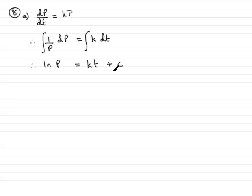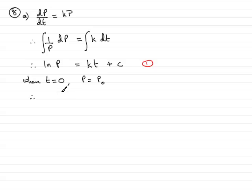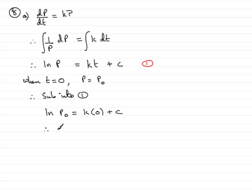We've got to work out what c is, and we use the conditions that are given. We're told that the initial population is p₀, so in other words, when t is 0 — the initial time — we're told that p equals p₀. I can substitute that into this equation. We've got natural log of p₀ equals k times 0 plus c. k times 0 is 0, so that means that c is equal to the natural log of p₀.